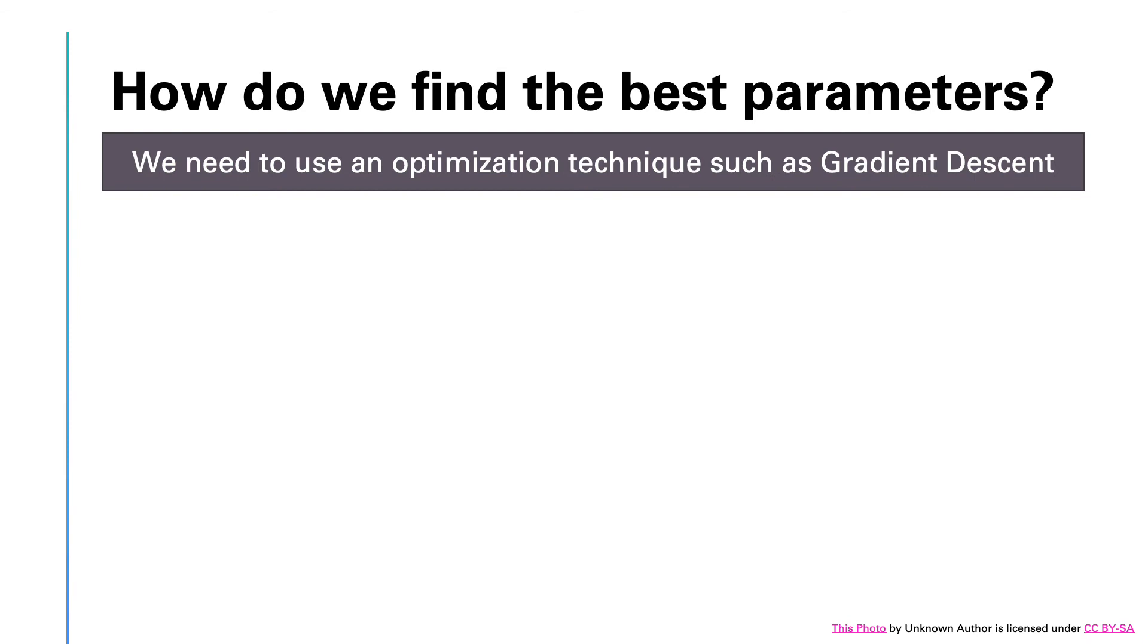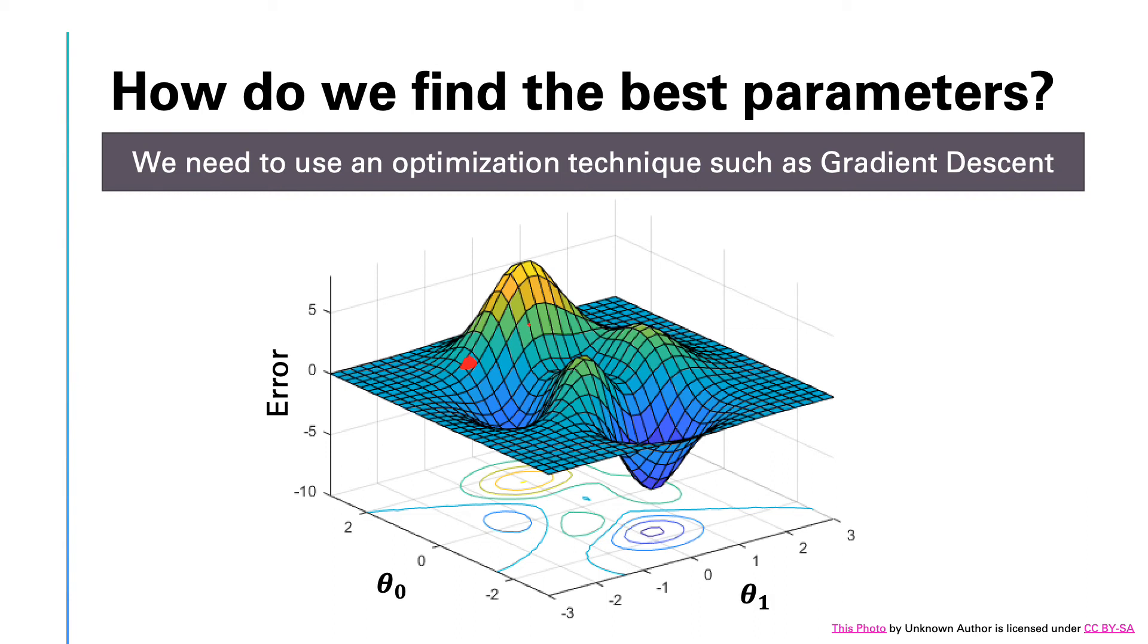One widely used technique is called gradient descent. The idea is very simple. We have two parameters θ₀ and θ₁ and we can think of the error as a two-dimensional function similar to the surface shown in this figure. You can also think that the surface looks like a bunch of mountains and valleys and the error is minimized at the bottom of the valleys.